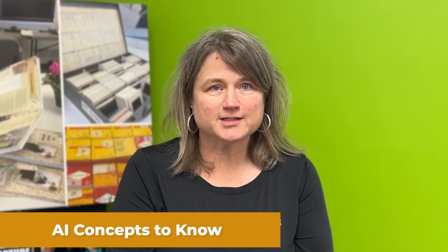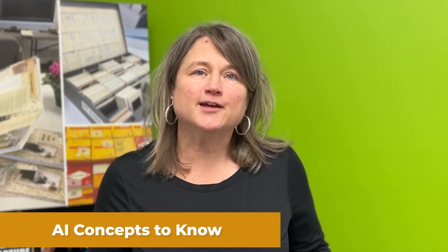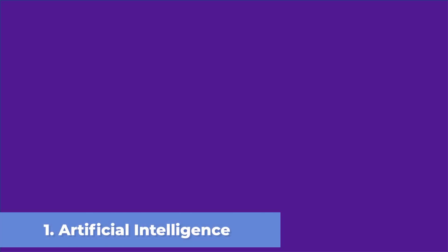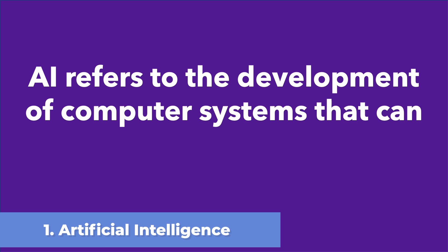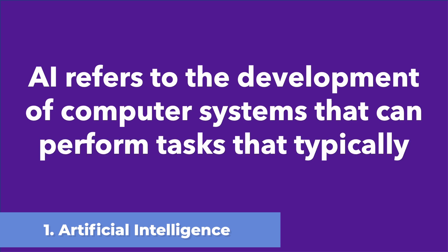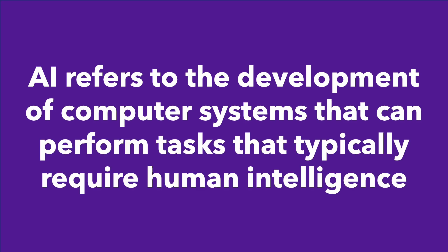Artificial intelligence concepts you need to know. The first is just a general definition: AI refers to the development of computer systems that can perform tasks that typically require human intelligence. There are many types of artificial intelligence — I'm going to talk about a few things I think you should know about.